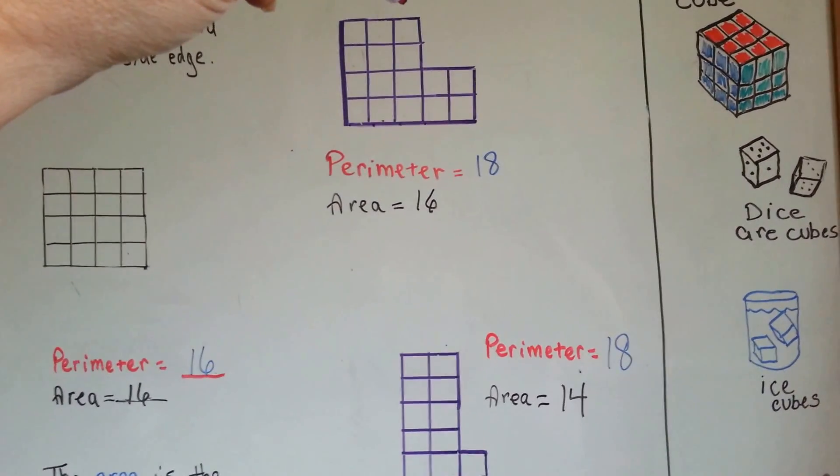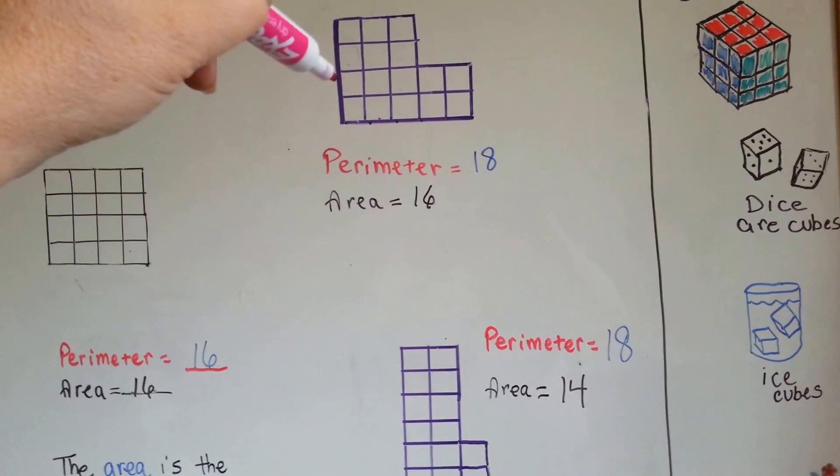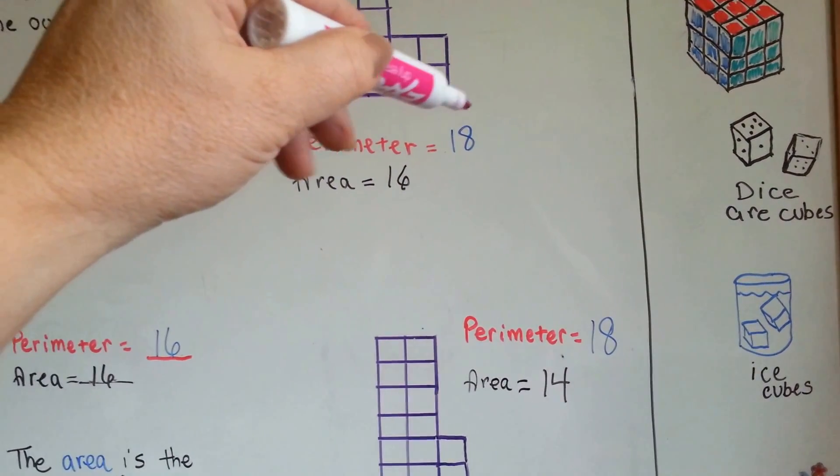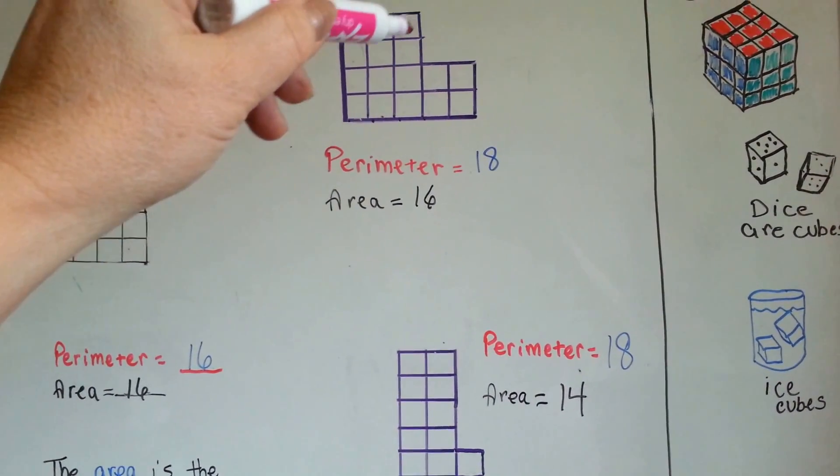Let's check it out. Start at the top. Counting perimeter. 1, 2, 3, 4, 5, 6, 7, 8, 9, 10, 11, 12, 13, 14, 15, 16, 17, 18.